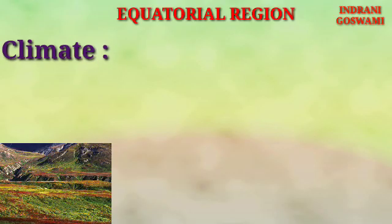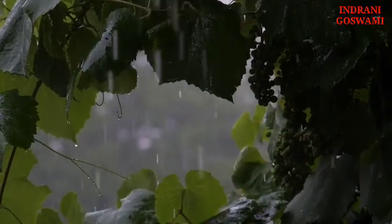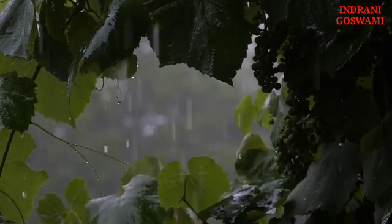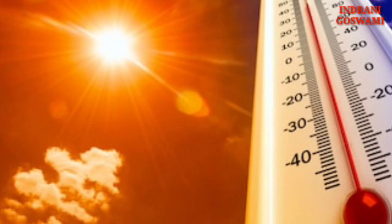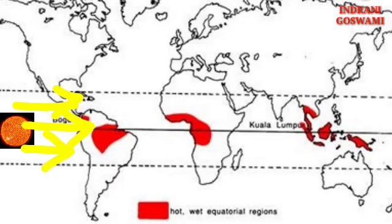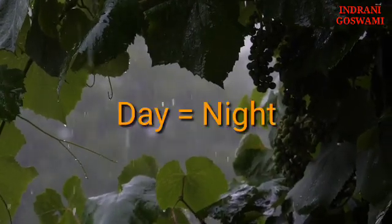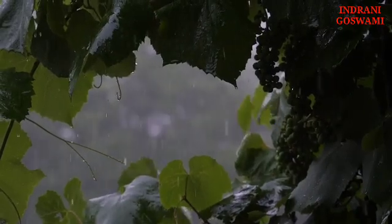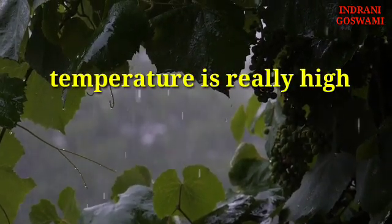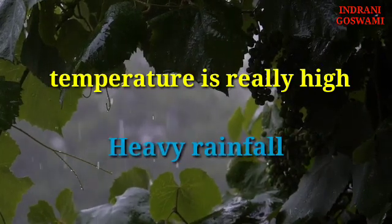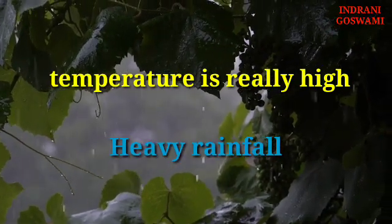The climatic conditions of the equatorial region are very interesting. The climate is characterized by heavy rainfall and constant high temperatures throughout the year, because this region lies in the torrid belt and receives direct sun rays at a high angle of 90° throughout the year. Days and nights are almost equal in duration throughout the year. Two key characteristics: temperature remains consistently high year-round, and the region receives heavy rainfall.